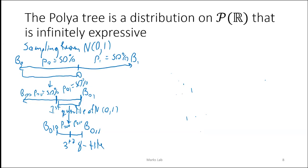To go to the Pólya tree, it's actually simple. This is the same as sampling a uniform(0,1) random variable by tossing a coin for its binary expansion, then mapping that to the real line using the normal quantile function — the inverse CDF.